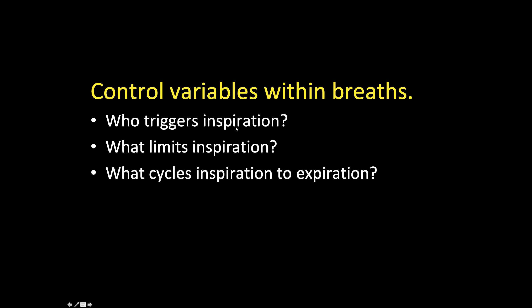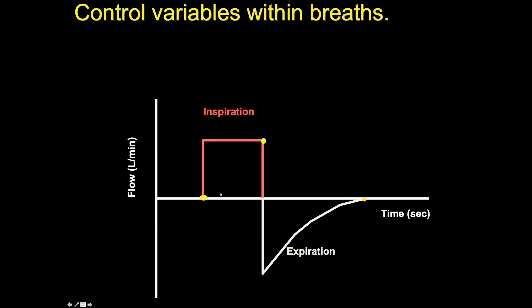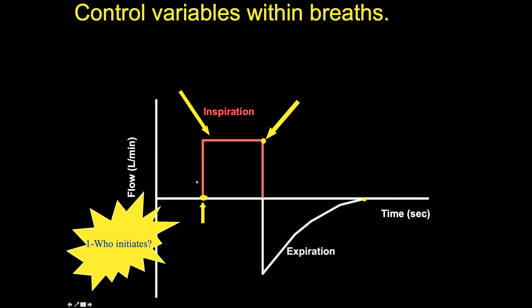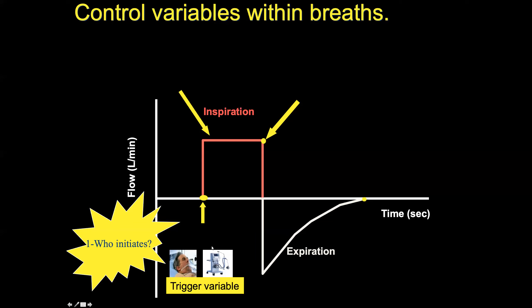Now two things we have to learn: who starts a breath and who cycles the inspiration to expiration. Who initiates the breath — either the patient or the ventilator. The only way a ventilator can start is by lapse of time. If you set 10 breaths every 6 seconds, it will start an inspiration. The ventilator initiating a breath in a paralyzed patient is always by elapse of time.